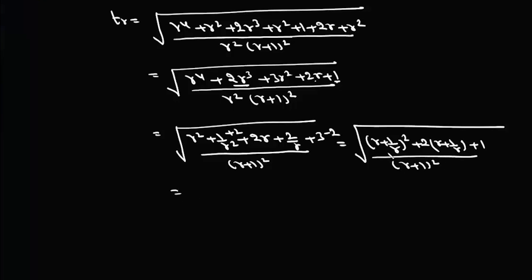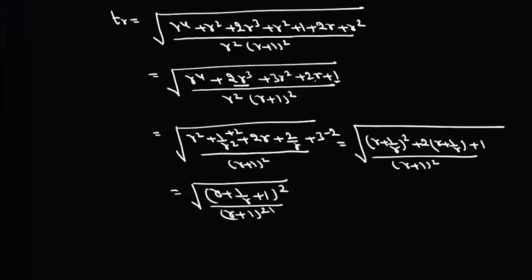This is nothing but a² + 2ab + b² = (a + b)², which is a perfect square. So t_r simplifies to (r² + r + 1) / (r(r+1)).